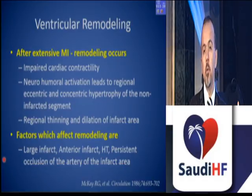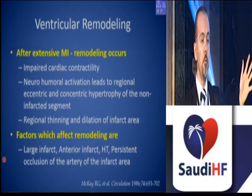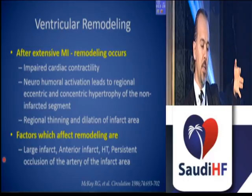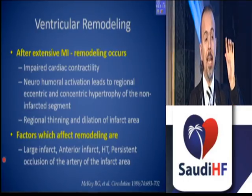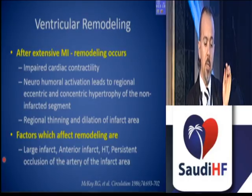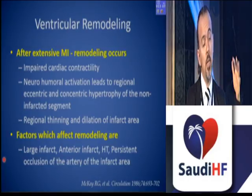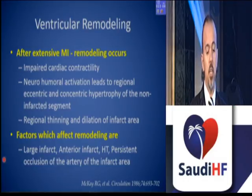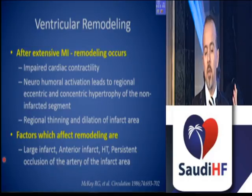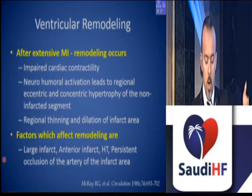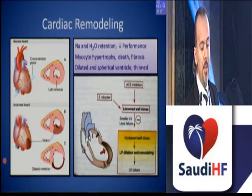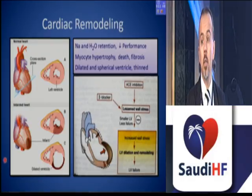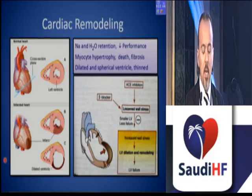Ventricular remodeling is an important parameter to address. After extensive myocardial infarction, remodeling occurs inevitably — there is impaired cardiac contractility accompanied by neurohormonal activation, which leads to regional eccentric and concentric hypertrophy of the non-infarcted segments in some cases, and also regional thinning and dilatation of the infarct area. The larger the infarct, the higher the ventricular remodeling rate. We want to prevent this cardiac remodeling at every stage.